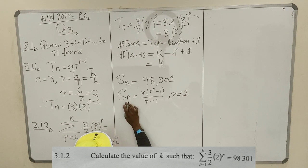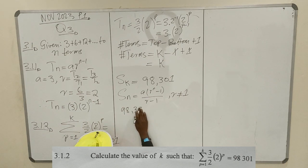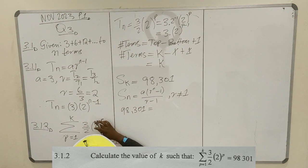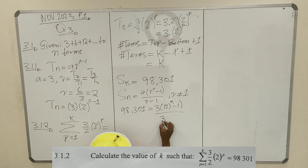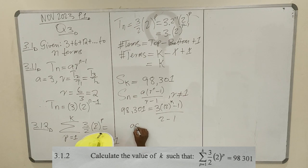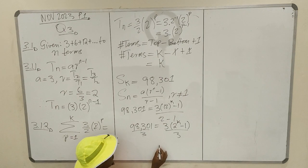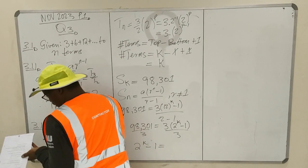So the sum of K terms equals 98,301. That equals A, which is 3, times (2^K − 1), all over (2 − 1). Dividing both sides by 3, you get that 2^K minus 1 is equal to 98,301 divided by 3.